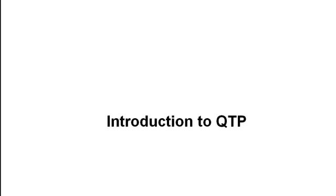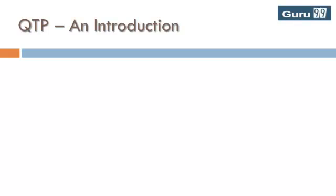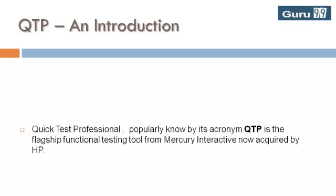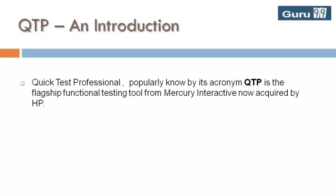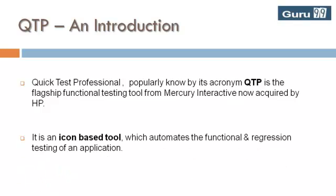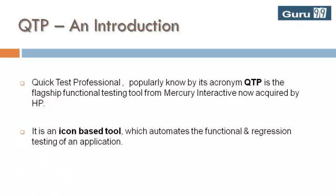Introduction to QTP — QuickTest Professional, properly known by its acronym QTP, is a flagship functional testing tool from Mercury Interactive, now acquired by HP. It's an icon-based tool which automates the functional and regression testing of an application.